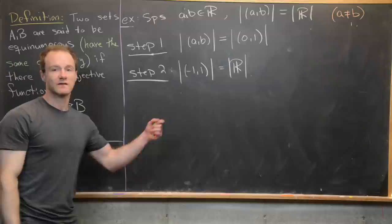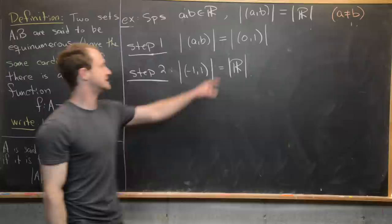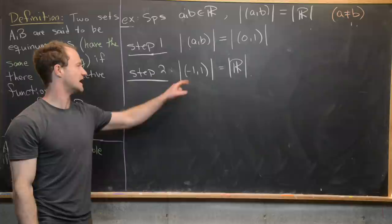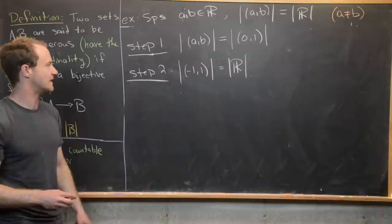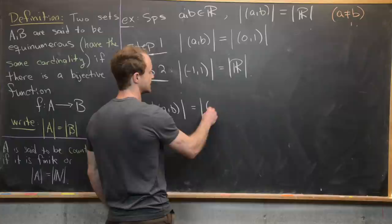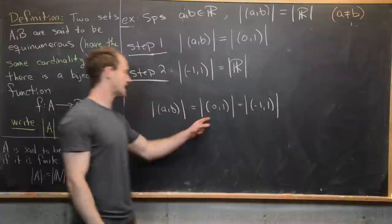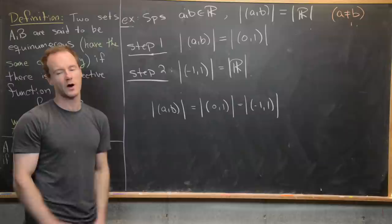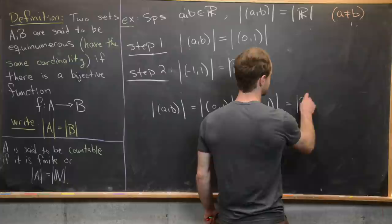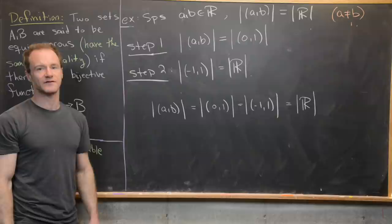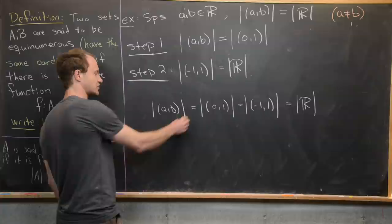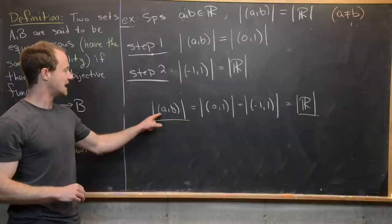To summarize: step one showed that any open interval (a, b) is equinumerous with (0, 1); step two showed that (−1, 1) is equinumerous with ℝ. By step one, (0, 1) is equinumerous with (−1, 1). Using transitivity of equinumerosity — a good homework exercise to prove carefully — the extreme left and right sides of this chain show that any open interval (a, b) is equinumerous with the real numbers.